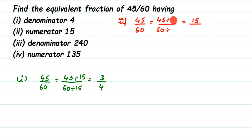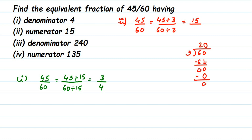From the previous question we know that when we divide 45 by 15 we get 3, because 15 times 3 is 45. So here we have to divide by 3. We should do the same operation in both numerator and denominator — otherwise the value of the fraction will change. We cannot just change the numerator or just the denominator; if you modify one, the value of the whole number changes. So dividing both numerator and denominator by 3: 60 divided by 3 is 20. So the answer is 15 by 20.